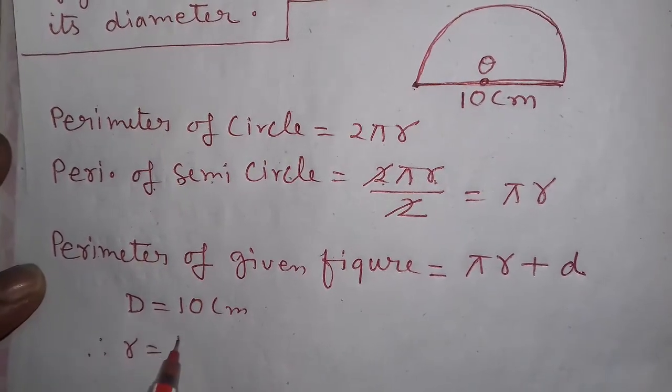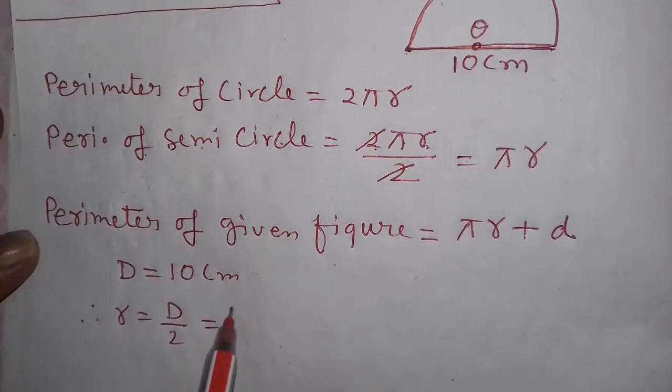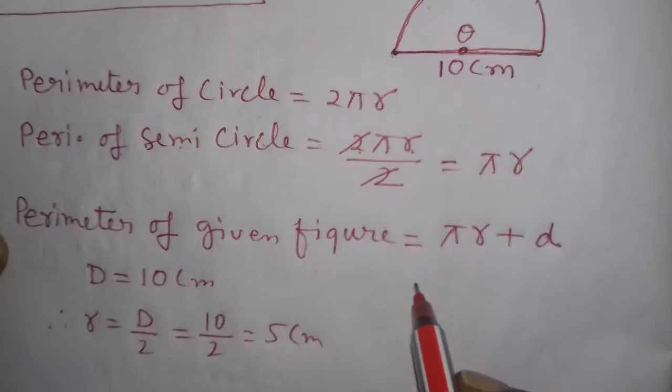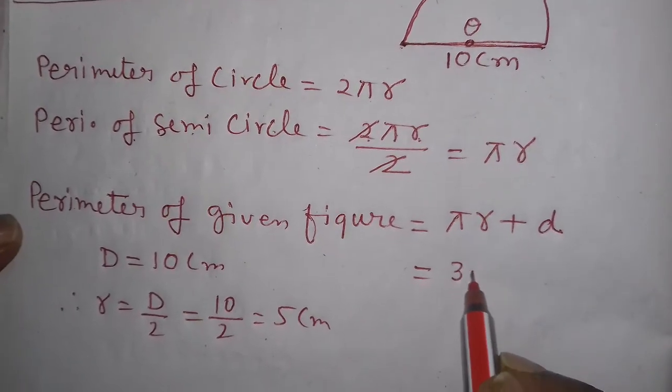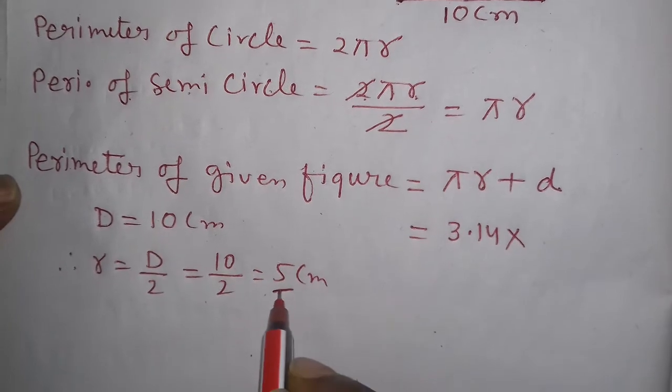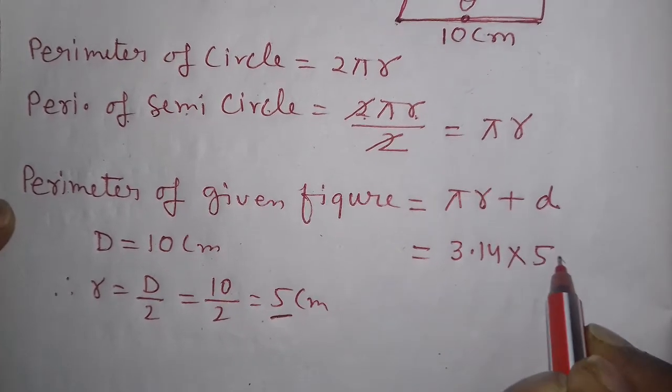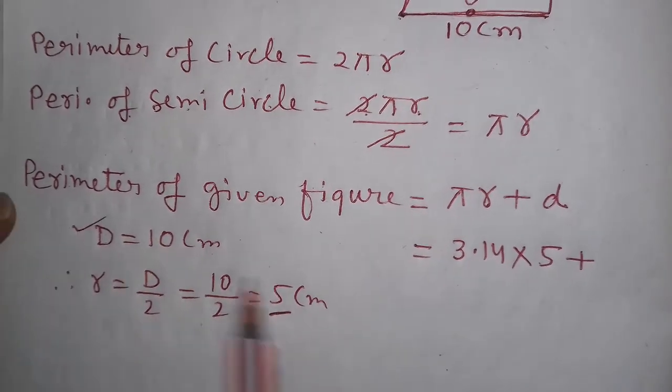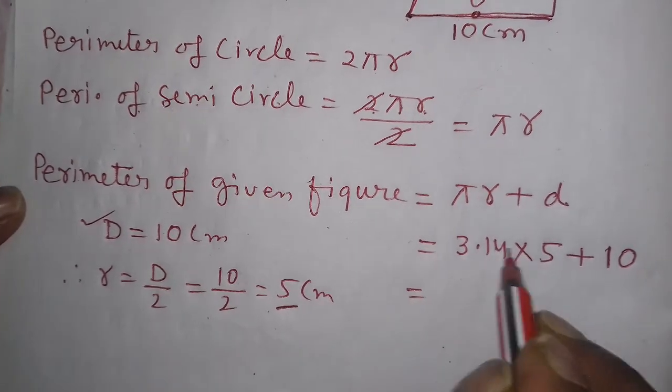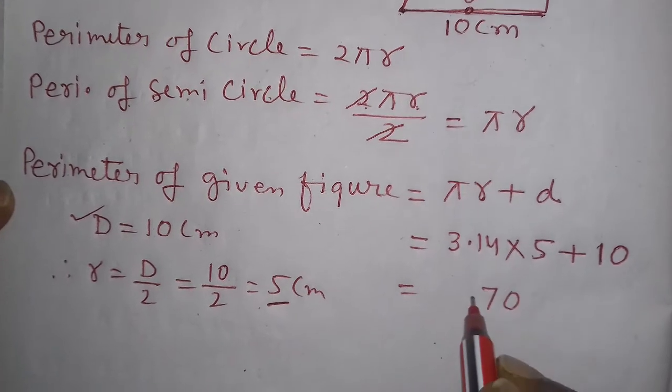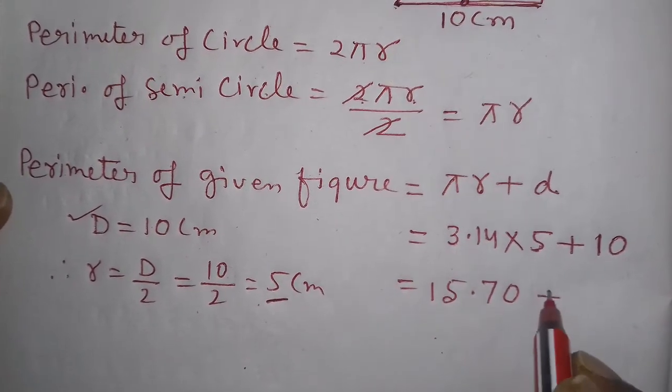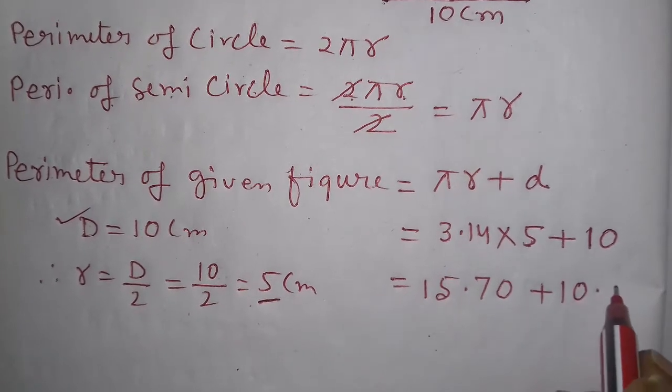The value of π is 3.14, r is 5, and d is 10 centimeters. Calculating: 3.14 × 5 = 15.70, plus 10.